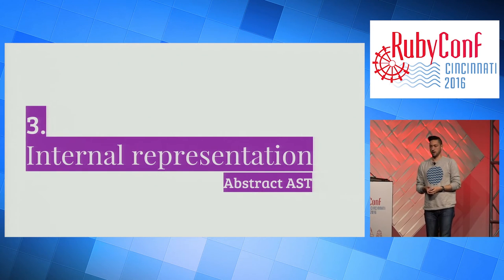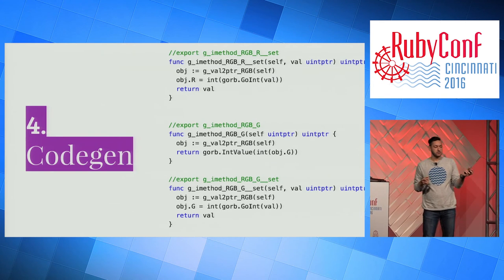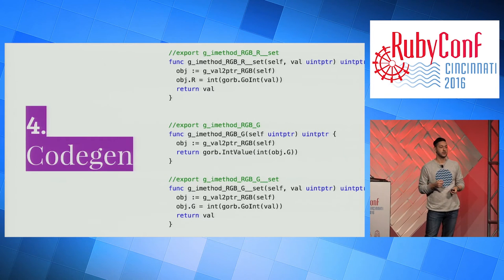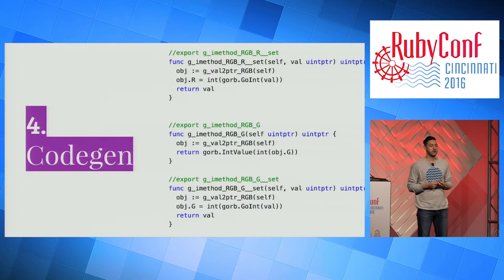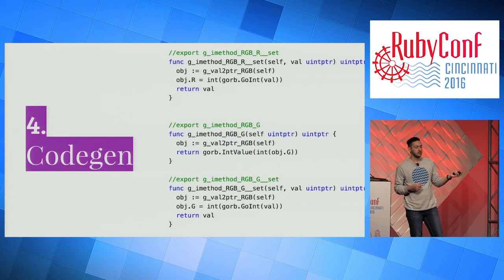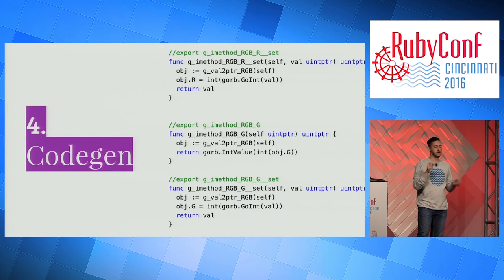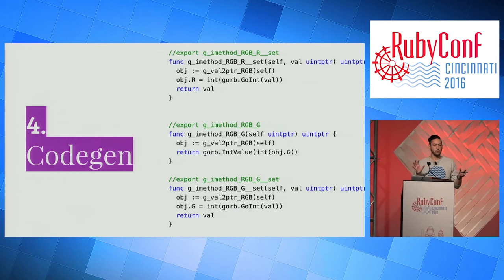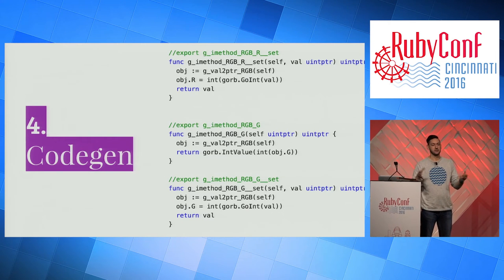Then we go ahead and spit out a bunch of Go code. This part uses templates — sort of like ERB-style templates — where we generate functions. You can see little bits and pieces of the structure in the outputted code. We had three attributes at the top of an RGB struct, and you can see the code that generates the attribute getters and setters for the RGB fields in Go — the setter up top that sets the value, and the getter functions that get and set the value inside of Ruby. Once we have those Go files, they can be compiled into native extensions using go build with a couple of command flags, giving you a native extension you can load directly into Ruby.